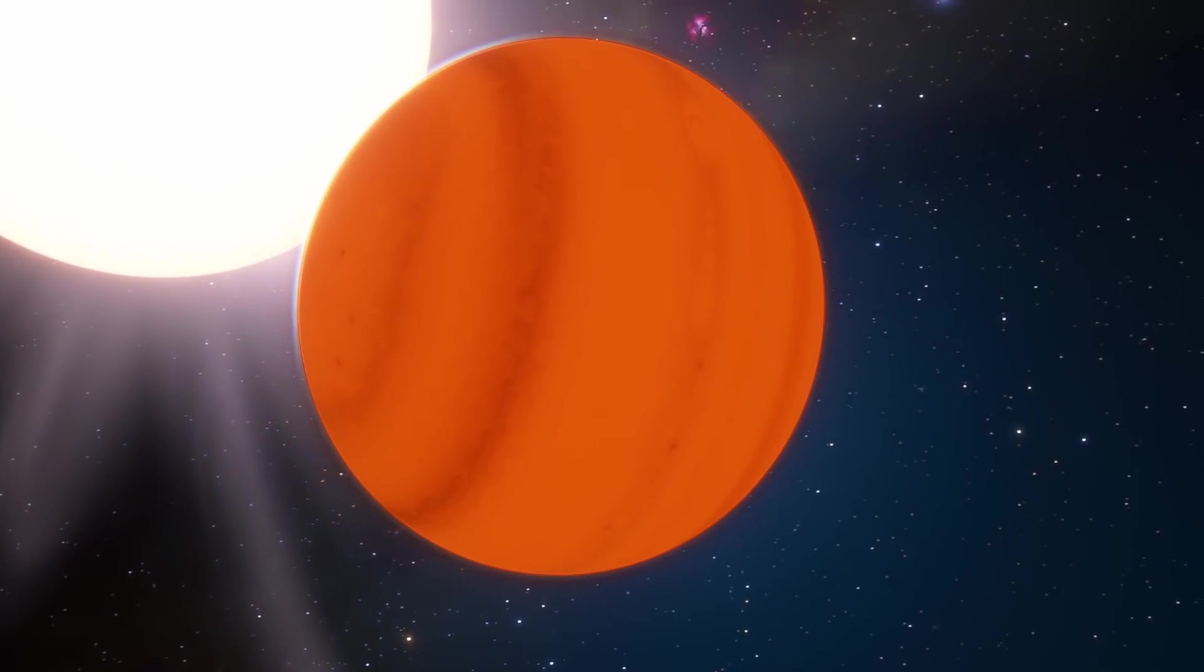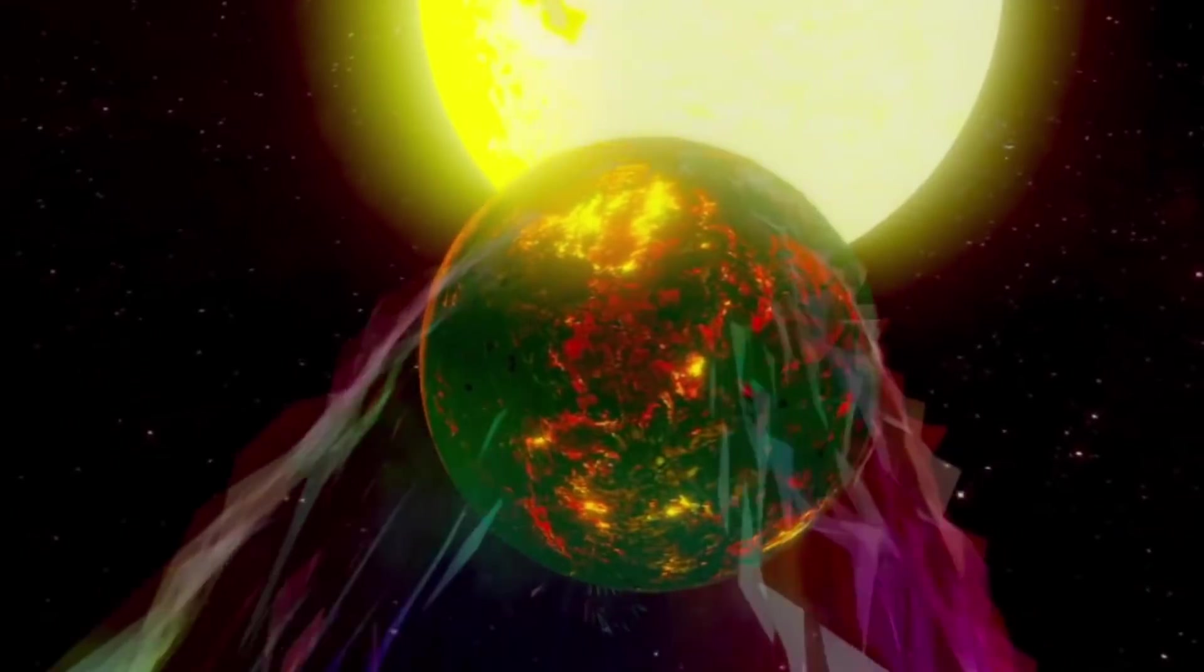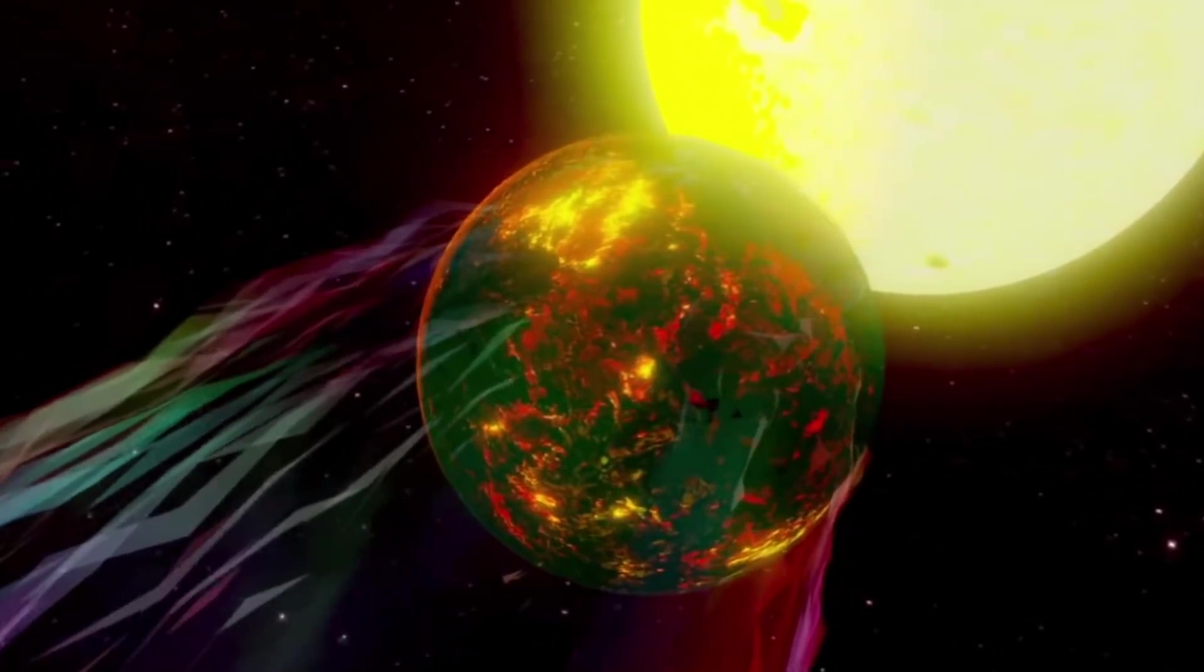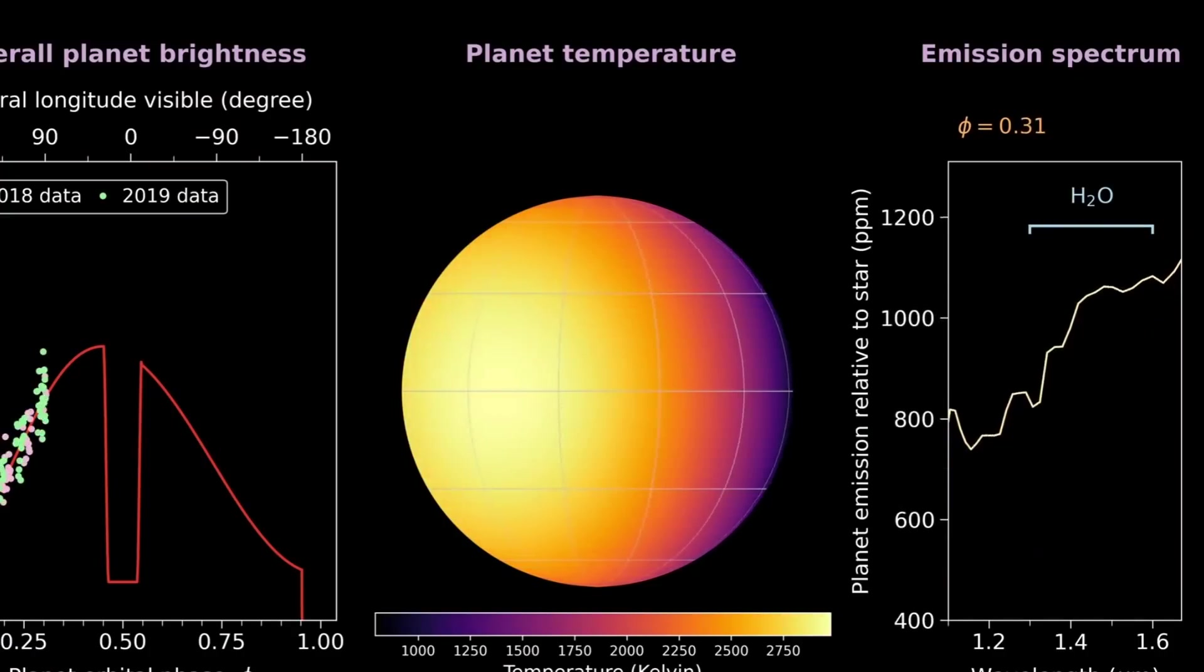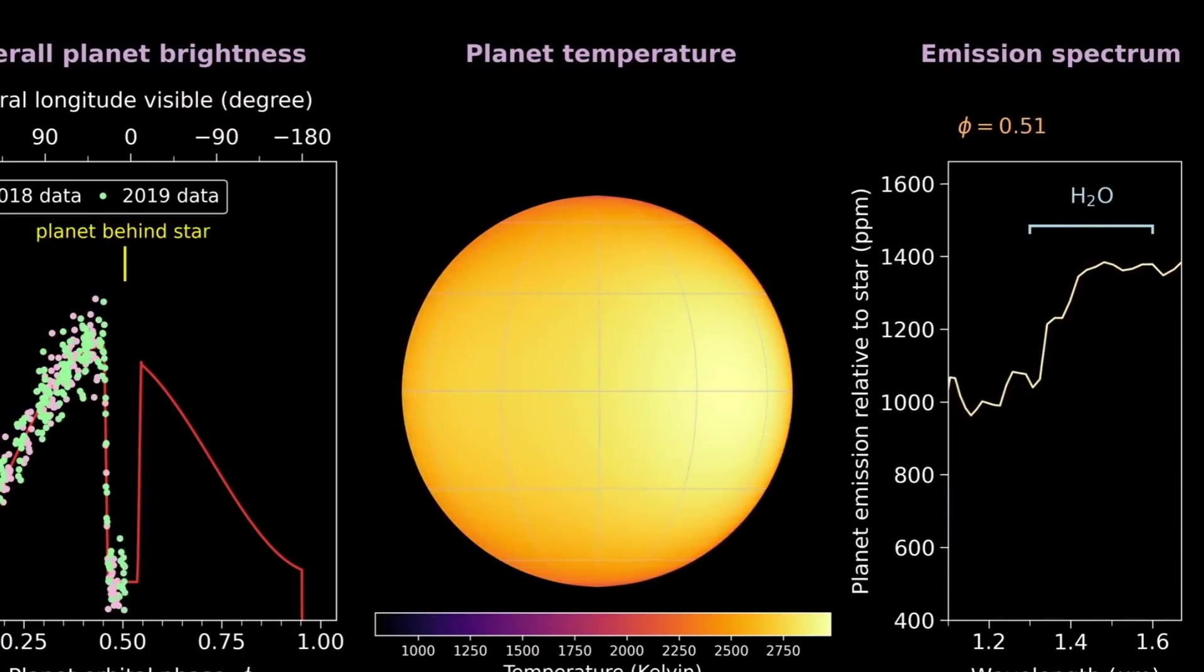A planet that was already quite extreme when it was originally discovered but has now been confirmed to be even more extreme, possessing one of the strangest water cycles we've ever seen anywhere.